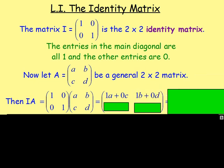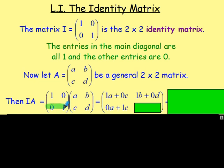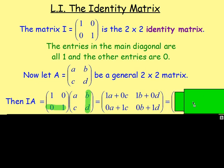In order to work out the next entry — this entry in the first row and the second column — we multiply the first row by the second column: 1 times B and 0 times D. Moving down a row to work out the entry in the second row, first column, we multiply the second row by the first column: 0 times A and 1 times C. And to work out the entry in the second row and second column, we multiply the second row by the second column: 0 times B and 1 times D. If we do that, what do we end up getting?